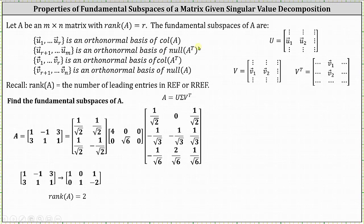The set containing the vectors V sub one through V sub R is an orthonormal basis for the column space of A transpose. Remember, the V vectors are from the columns of matrix V, which would be the rows in the matrix V transpose. And finally, the set containing the vectors V sub R plus one through V sub N is an orthonormal basis for the null space of A.